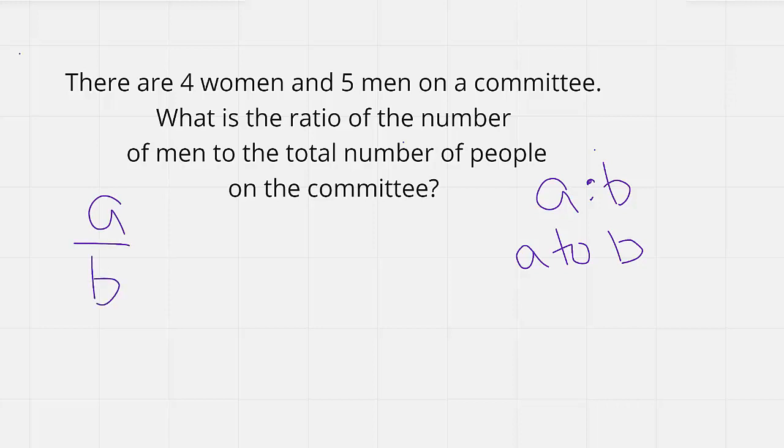When writing a ratio as a fraction, the first number they mention or the first thing they ask for is going to be your numerator. And the second number they give you or ask for is going to be your denominator.